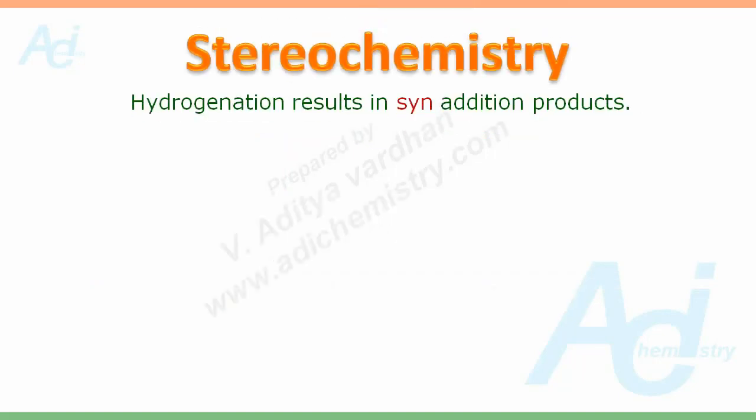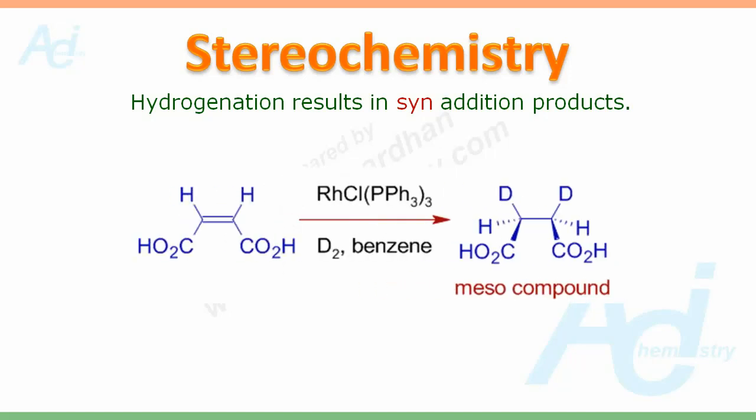The hydrogenation reactions catalyzed by Wilkinson's Catalyst are stereospecific — it results in syn-addition products. For example, in this case, the deuterium atoms are added from the same side of the double bond.